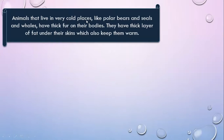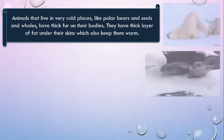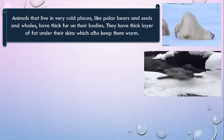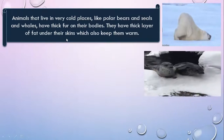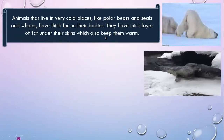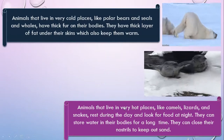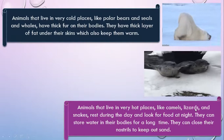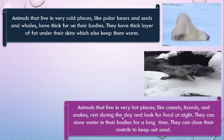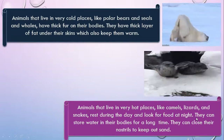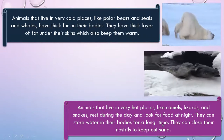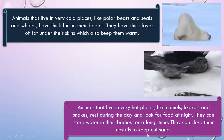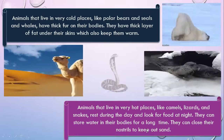How do animals survive in extreme climates? Animals living in cold places, like polar bears, seals, and whales, have thick fur and a thick layer of fat under their skin to keep them warm. Animals living in very hot places, like camels, lizards, and snakes, rest during the day and look for food at night. They can store water in their bodies and close their nostrils to keep out sand.